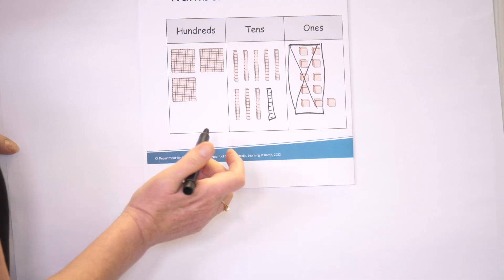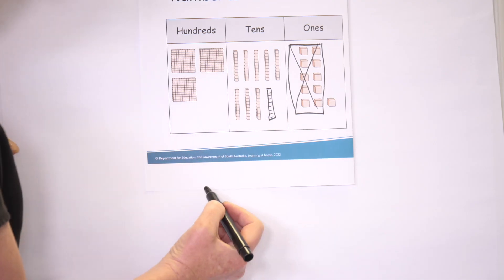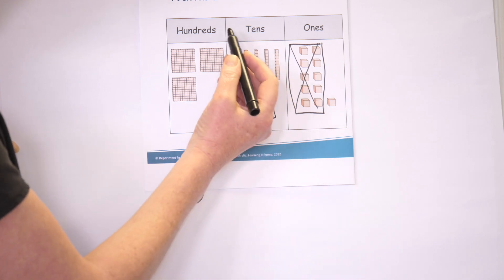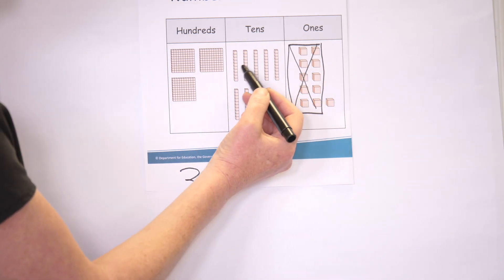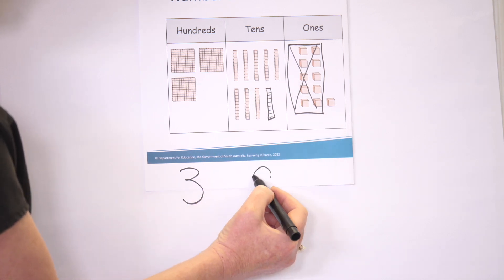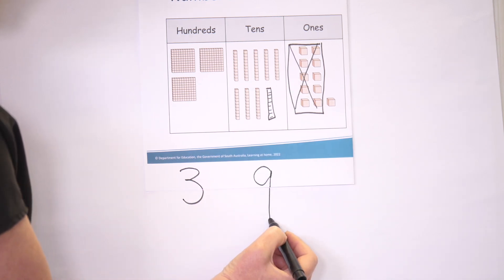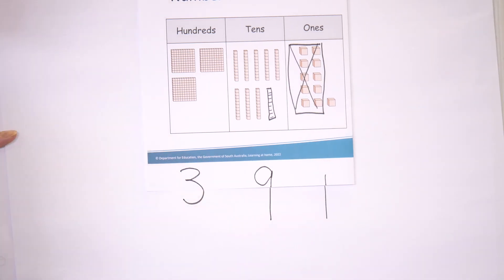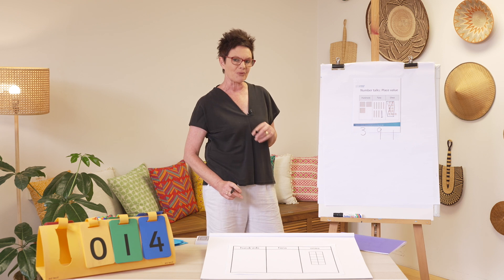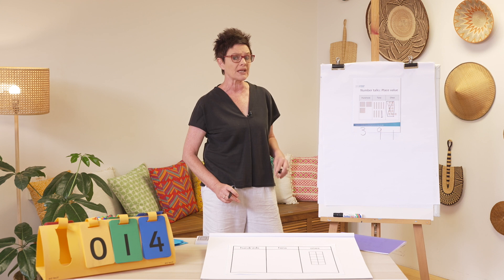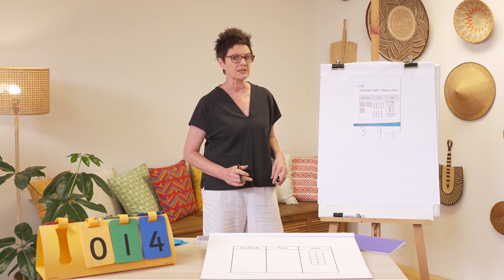Now I can have a look at my number. I have three hundreds, I have five and four — nine tens — and I have one one. Did you make three hundred and ninety-one? I hope you did, and I hope you're getting better at this each time we practice.